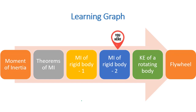We have learned about the moment of inertia of six types of rigid bodies. In our next lecture, we will find and explain the kinetic energy of a rotating body. See you in the next lecture, thank you for listening.